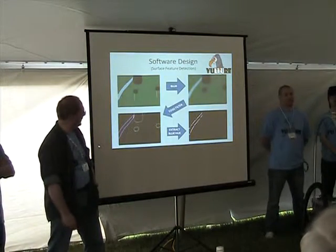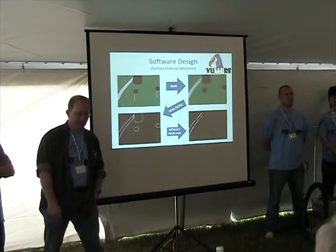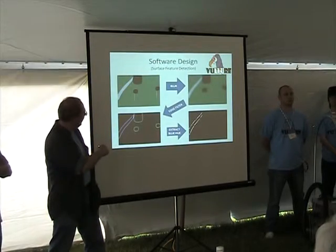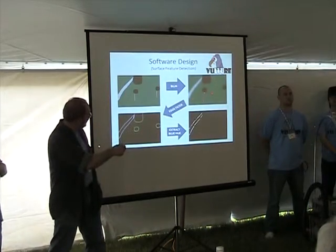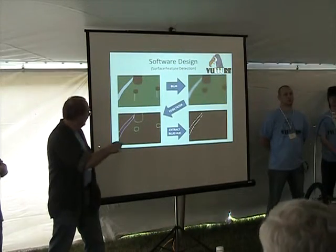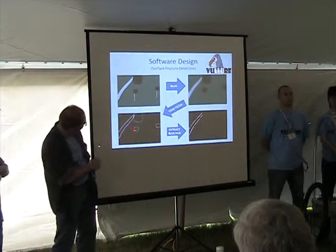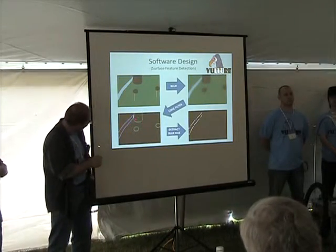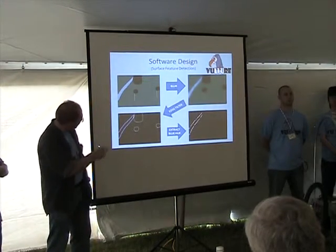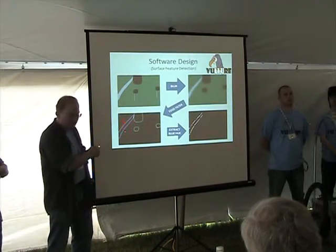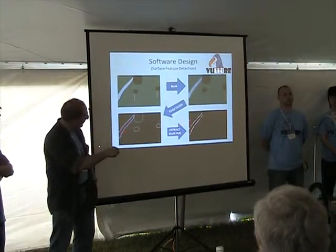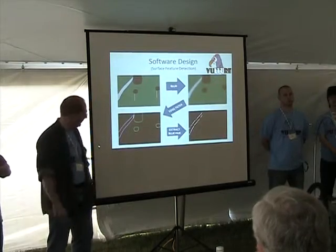For the actual detection of lines — for the lanes and the obstacles that are painted on the ground — we go through a multi-step process. First, we blur the image to get rid of the high-frequency edges. Then we apply an edge filter. The algorithm we use actually presents different colors at different types of boundaries. The boundaries between green and white produce a blue-type image. We can then select off of that blue color and come up with the lines that actually exist on the ground.